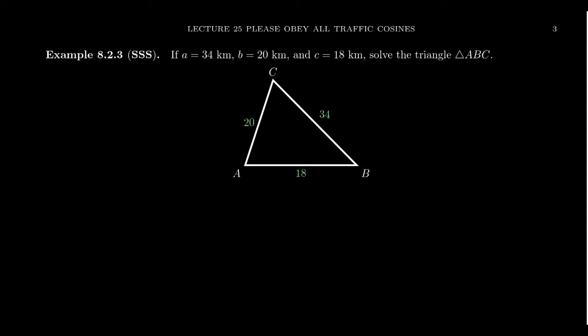Let's say that the side opposite of angle A is 34 kilometers, the side opposite angle B is 20 kilometers, and the side opposite angle C is 18 kilometers. We need to find the three angles, and it doesn't matter really which angle we choose. We're going to use the law of cosines to find the missing angle.